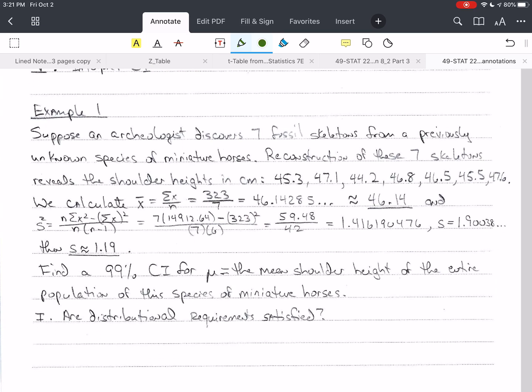Let's suppose an archaeologist discovers seven fossil skeletons from a previously unknown species of miniature horses. They reconstruct these skeletons and find that the shoulder heights in centimeters are given here. These are the seven values. The first thing we'll need to do when we're given actual values is calculate the sample mean. I write the formula for the mean, plug in the values, and get the answer. In this case, I'm rounding it to two decimal places using the roundoff rule. Because my data has one decimal place, x bar should have two decimal places.